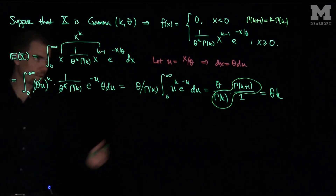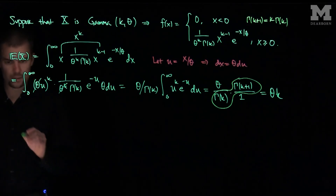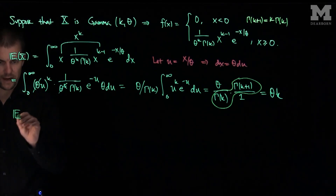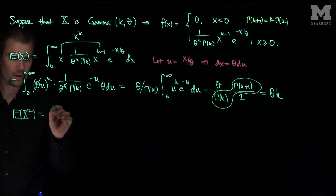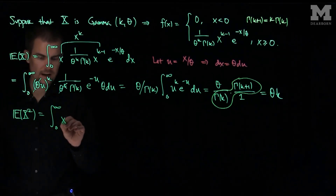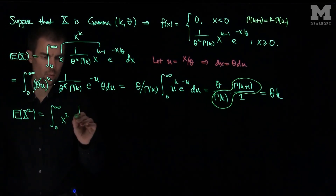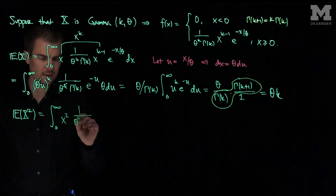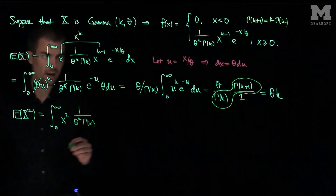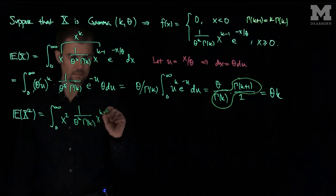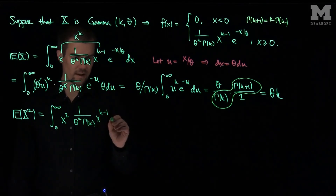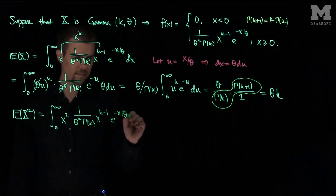To compute the variance, we do a similar calculation. The expected value of x squared for a gamma distribution is the integral from zero to infinity of x squared, one over theta to the k, gamma(k), x to the k minus one, e to the negative x over theta dx.